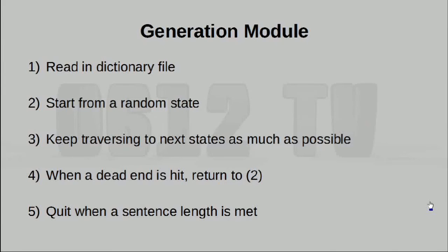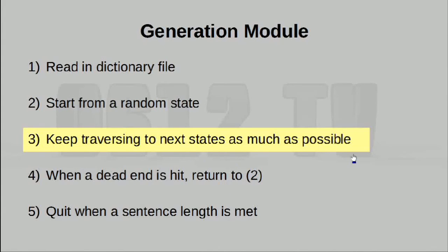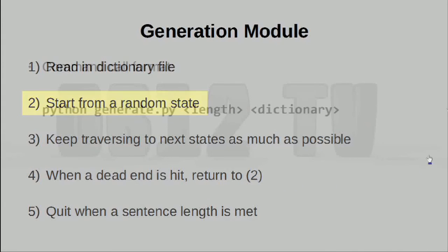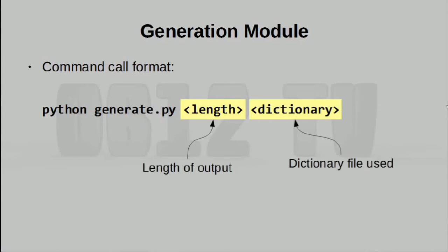Let's begin writing our text generation module. This one is actually pretty straightforward. Basically, all this is doing is finding some random position in the finite state machine to begin with, and just traversing for as far as you possibly can. Most of these steps are fairly straightforward, but some will be a little bit challenging. There are some different conditions you have to look out for. The same deal for finding a new random spot in the finite state machine — this happens both at the beginning as well as when you traverse along and run into a dead end. The command call is fairly straightforward: we only need to take in two different parameters — how much output we want to generate, and the dictionary file. Without further ado, let's jump into the code.